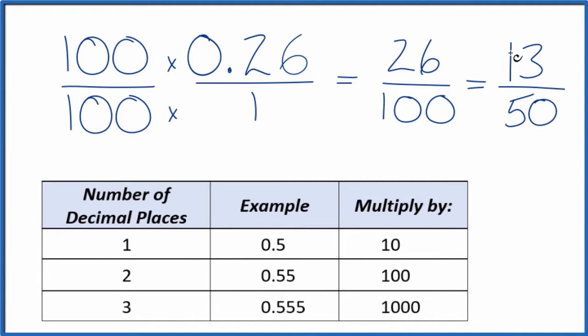So we end up with 13 over 50 as our fraction for 0.26. If you divide 13 by 50, or 26 by 100, you get the decimal 0.26.